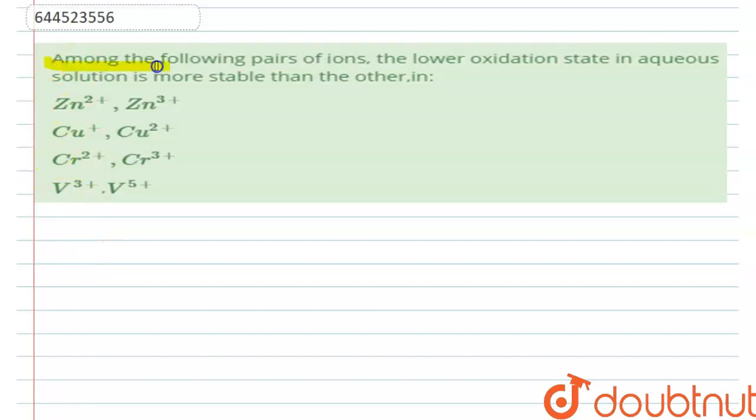Let us look at the question. Among the following pairs of ions, the lower oxidation state in aqueous solution is more stable than the other. Here we have been given four sets of pair of ions, and we need to find out that out of all four pairs which one will have the most stable lower oxidation state in aqueous solution.